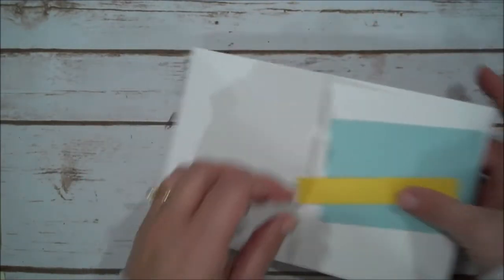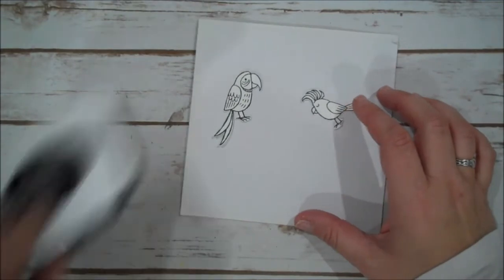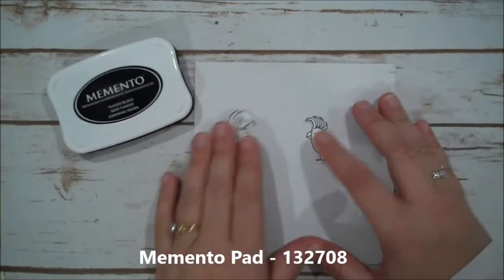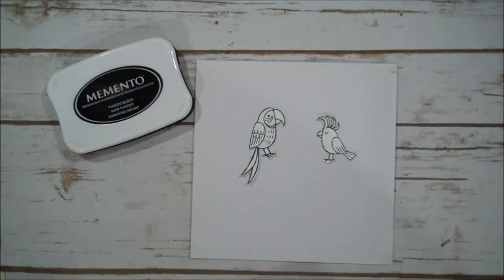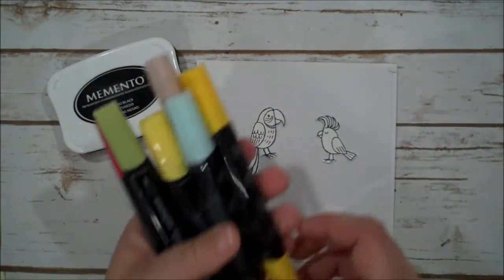Alright, so let's go ahead, we'll start I think with our birds. I've already stamped them in the Memento Tuxedo Black ink and I've fussy cut them out because I knew that would take a little bit of time. So for the Stampin' Blends today,